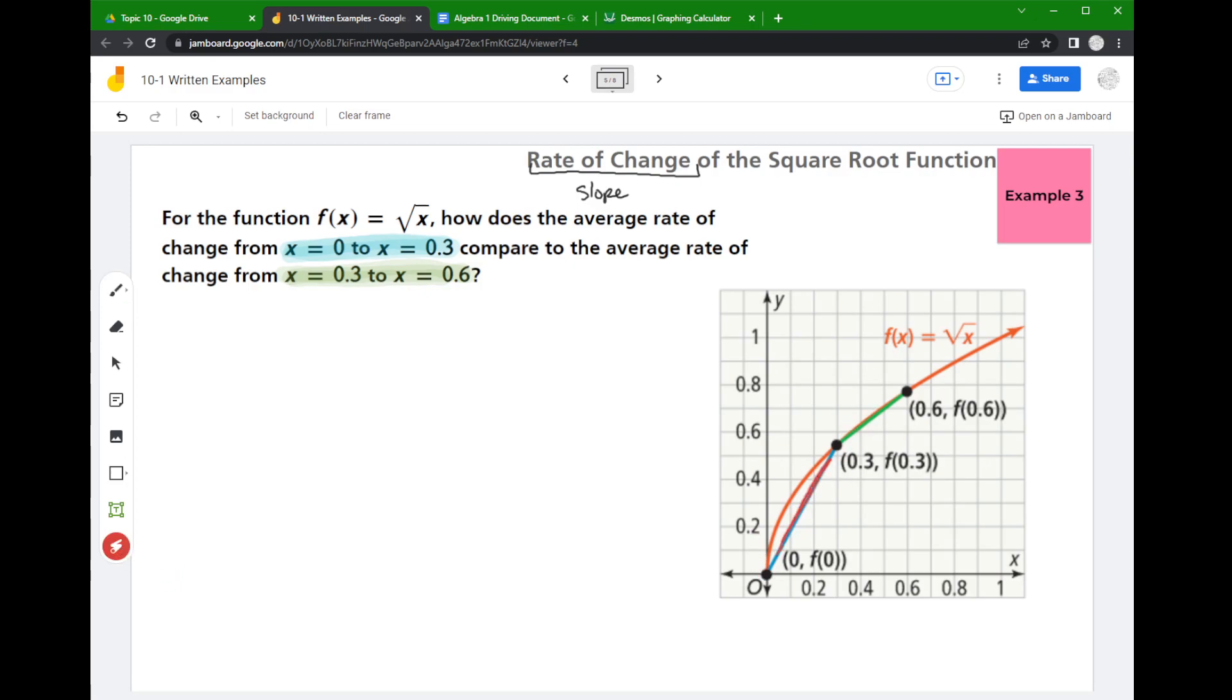And then these two x values are describing the green segment, so the green segment is right there. Now visually, if I'm looking at that, I can see that the blue section is a whole lot steeper than the green section.